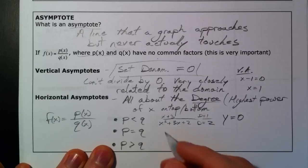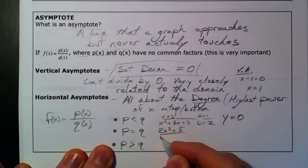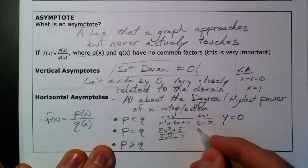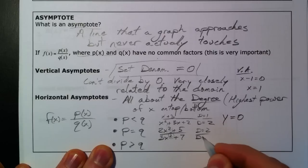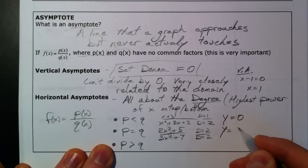If p is equal to q, say you have 2x squared plus 5 over 3x squared plus 7. The degree on top is 2, the degree on the bottom is 2. So, if that's the case, you take the leading coefficients, y equals a over b.